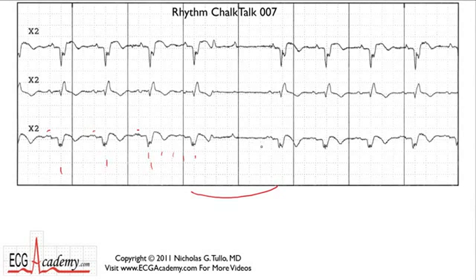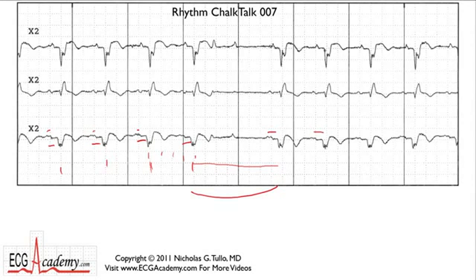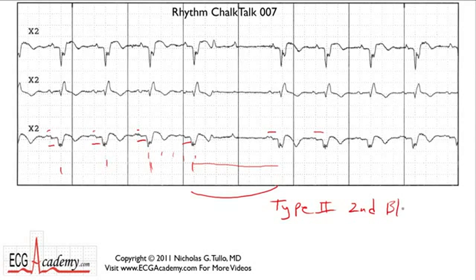So we have regular PR intervals that are fixed, and we have an R-to-R interval pause that's two times the previous R-to-R interval, and then the next PR interval following the pause is the same. Underlying all this you've got a bundle branch block. People would be tempted to think this is type 2 second-degree AV block — Mobitz 2 — because you have a fixed PR interval, a P wave that fails to conduct, and the R-to-R is exactly two times the previous R-to-R. So it all fits.